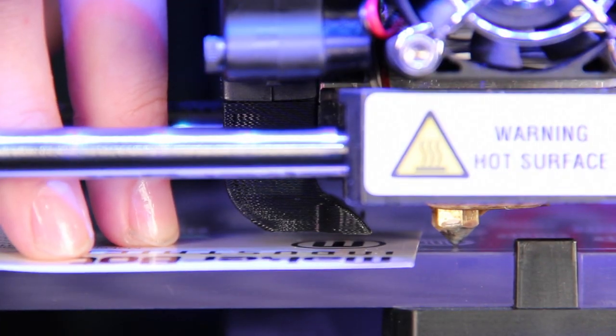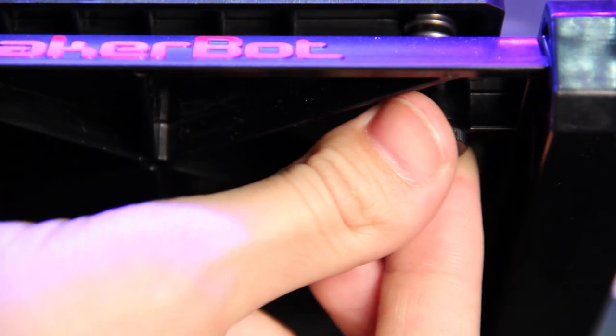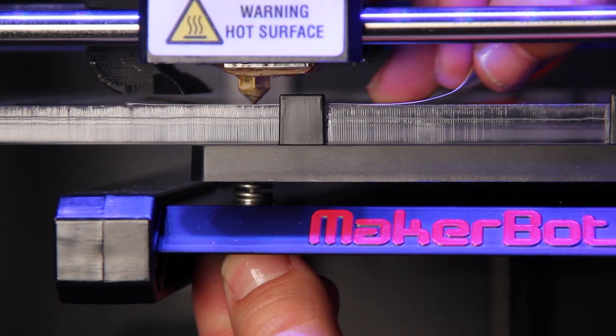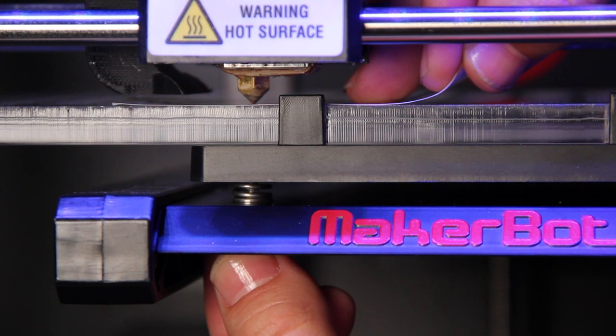If your platform is too close to your extruder, you'll need to tighten the knob by turning it this way. Slide the paper through until you feel some friction, but so you can still move the paper back and forth freely.